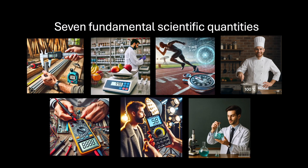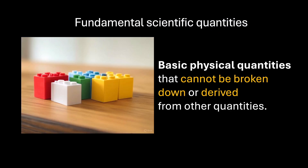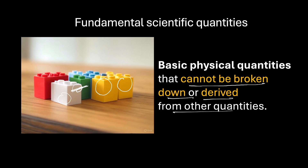Before we get into the units of these fundamental quantities, let's understand the term fundamental. The basic physical quantities that cannot be broken down or derived from other quantities are fundamental scientific quantities. You may imagine fundamental scientific quantities as individual Lego pieces. Just like you can snap two Lego pieces together, derived units are formed by combining two or more fundamental units. So all other quantities in science like speed, force, energy, and pressure are derived by combining these fundamental quantities.